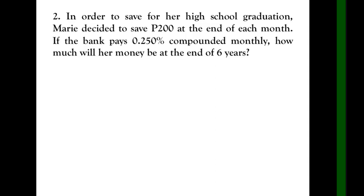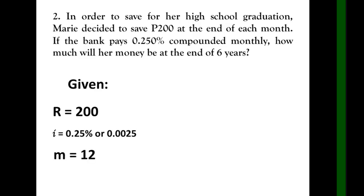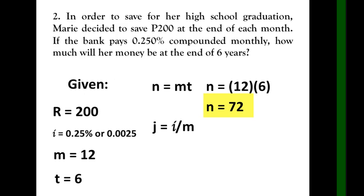First, write the problem and then write the given. For R we have 200. Our i is 0.25% or 0.0025. Move two decimal places to the left. m equals 12 because compounded monthly, and t equals 6 for years. Now we have n equals mt. m is 12 and t is 6, so we have a total conversion of 72. For j we have i over m, that is 0.0025 divided by 12, and you will get 0.0002083. The 3 repeats. Please write all of these numbers, or much better if you use eight decimal places for j.